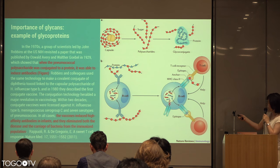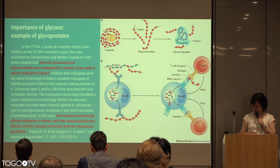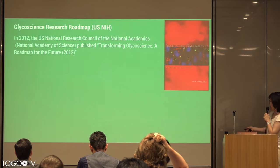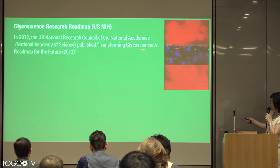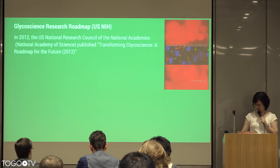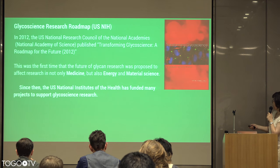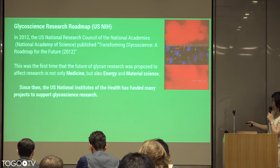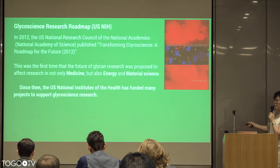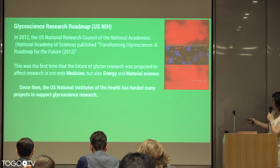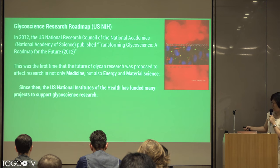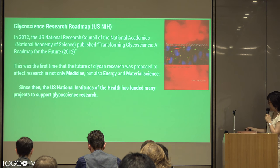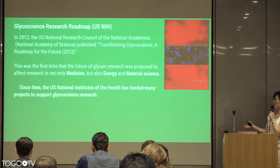Just saccharides themselves were not enough — we had to conjugate them onto proteins, and that's when they're able to really induce high-affinity antibodies. So we're finding that now we're not looking at just glycans; we have to think about the proteins as well, to which they're conjugated. In 2012, the National Academy of Sciences published a report called Transforming Glycoscience: A Roadmap for the Future, providing a roadmap in terms of bioinformatics. It was showing that glycan research was attracting not only research and medicine, but also energy and material sciences, especially in biofuels, cellulose, and production of new materials. Since then, the NIH has provided a common fund to support glycoscience research, and we just found out that we have a new glycoscience database integration project that was funded.